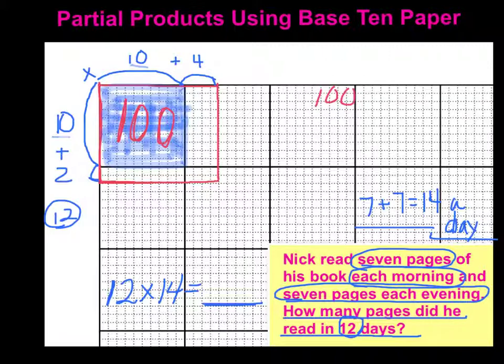That's my first partial product. My next one, I'm going to go right across from it. And this is going to be my 10 times 4. I know 1 times 4 is 4, so 10 times 4 has to be 40. But I can also see here that I have 10 rows with 4 in each row, which is 40. So let's shade this in, and then we'll mark that as our 40.